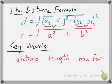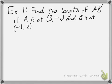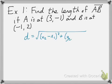Okay, let's do an example. Let's find the length of segment AB if A is located at (3, negative 1) and B is at (negative 1, 2). Here's the distance formula again: d equals the square root of (x2 minus x1) quantity squared plus (y2 minus y1) quantity squared. How do we know where to plug things in? Just like with the midpoint formula, it's good to label your coordinate points. So this first point will be our x1, y1, and the second one will be our x2, y2.